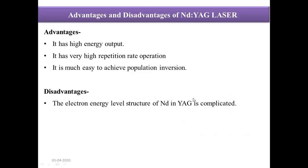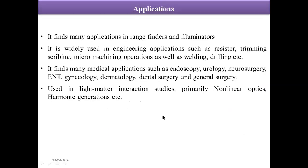These are some of the advantages and disadvantages of the Nd:YAG laser. The energy output is quite high and it has a very high repetition rate of operation. It is also much easier to achieve population inversion in this laser system. However, the neodymium ion has a very complicated electronic energy level structure, so the working is a little bit complicated.